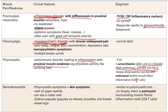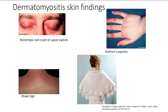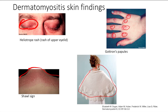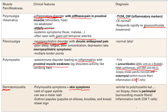In contrast, dermatomyositis is essentially the same as polymyositis except you also have skin symptoms — hence 'dermato.' The skin findings include: a heliotrope rash, which is a rash of the upper eyelids; Gottron's papules, which are little red papules on the fingers and joints; and the shawl sign, which is a rash in that shawl distribution.